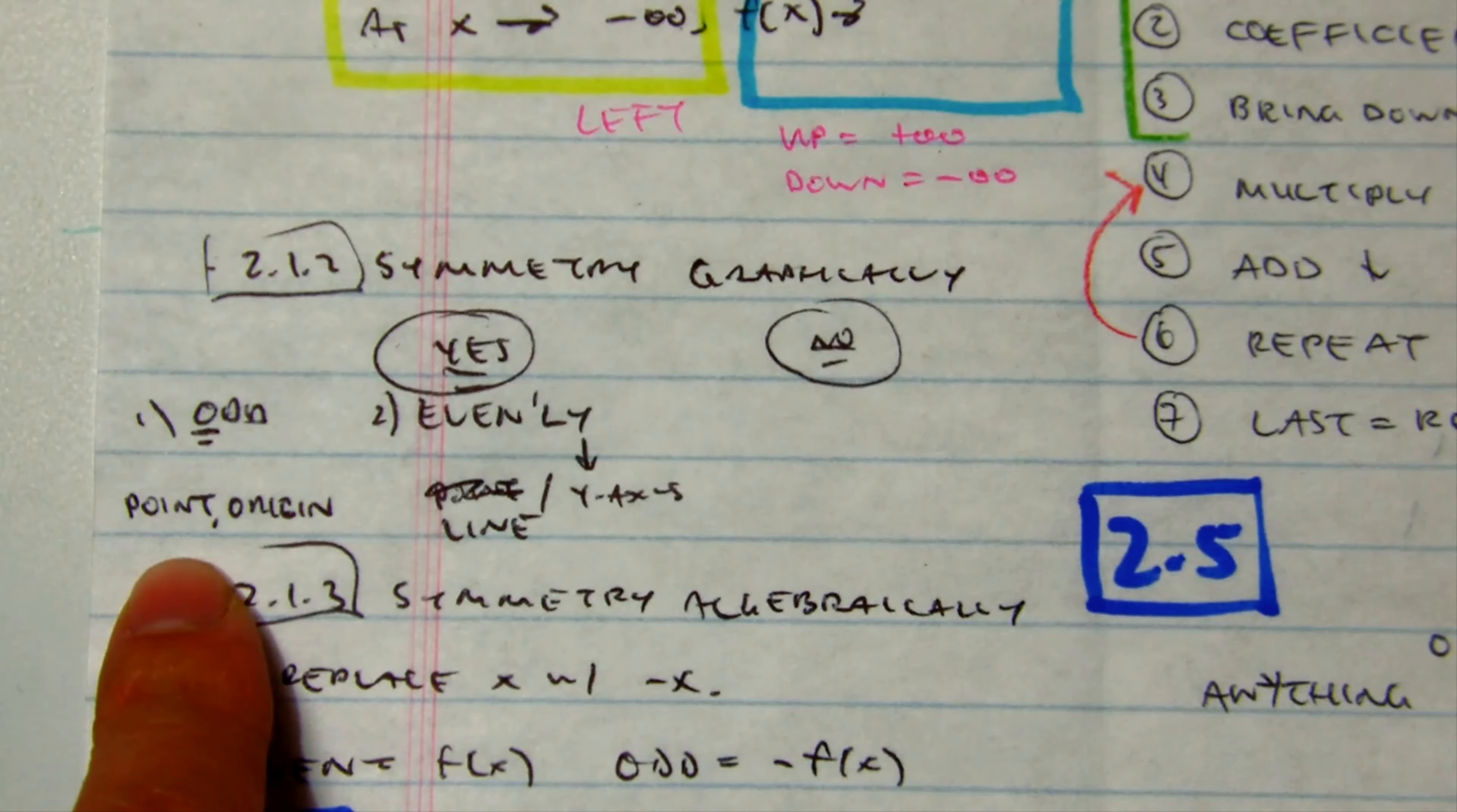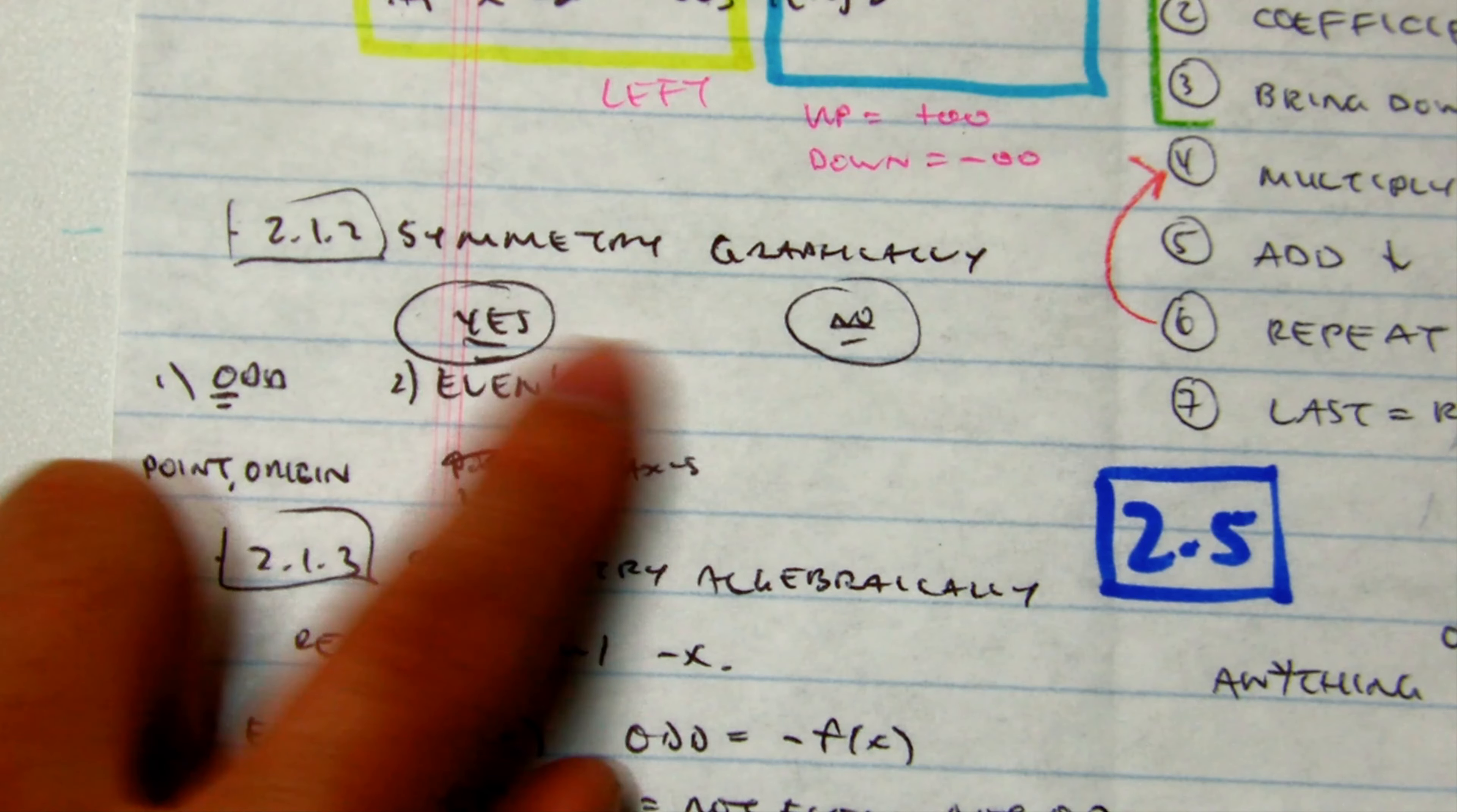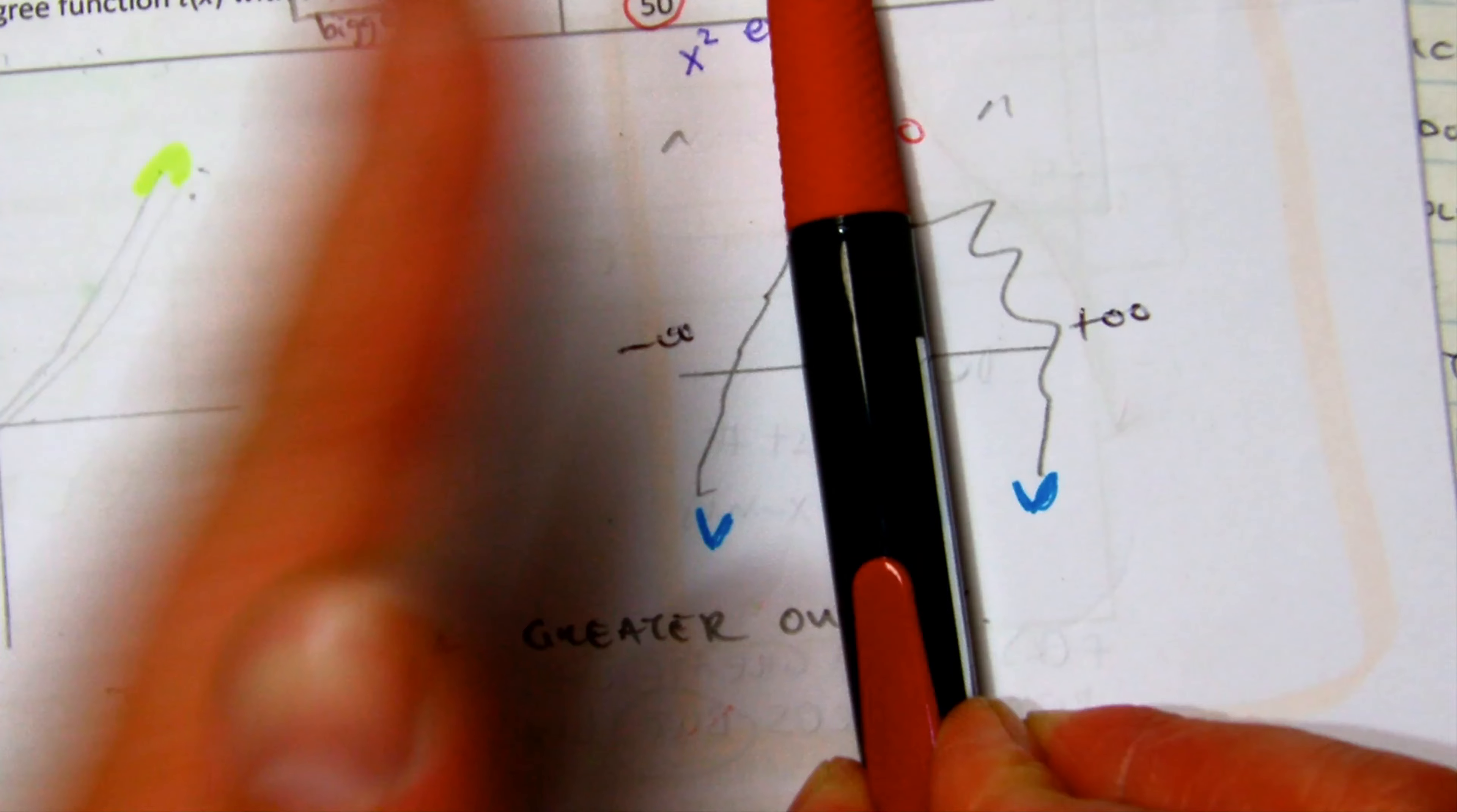It's symmetrical about a point, the origin, and it's rotated 180 degrees. Another way that it's symmetry graphically is evenly. So this would be an example of evenly if my graph was correct. It's mirrored over.